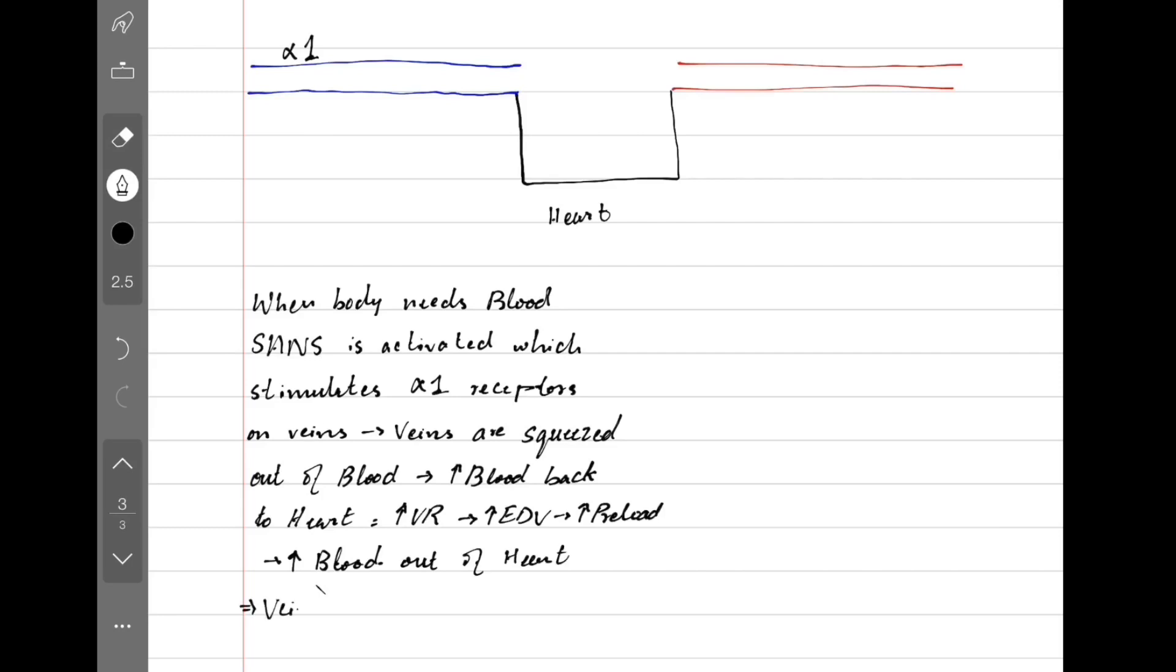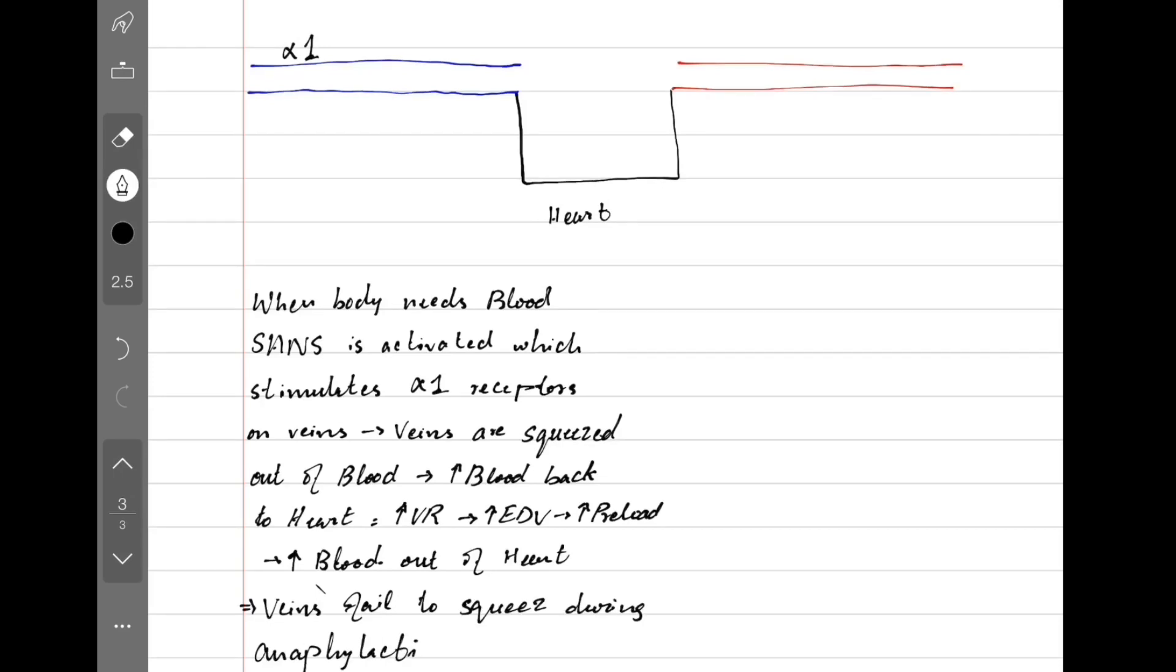This can go wrong in anaphylactic shock, in which veins fail to constrict and squeeze. So this is the clinical correlate. How do we increase venous return? By increasing the alpha-1 stimulation. How do we fail to achieve increase in venous return? What is the disease called? Anaphylactic shock.